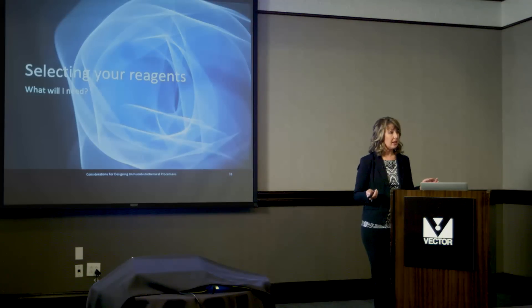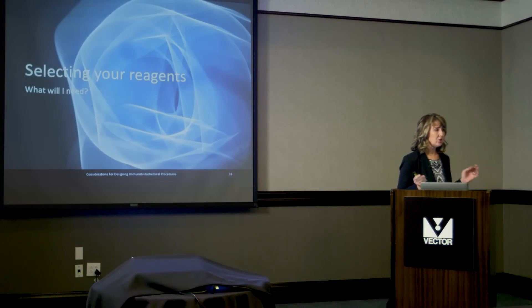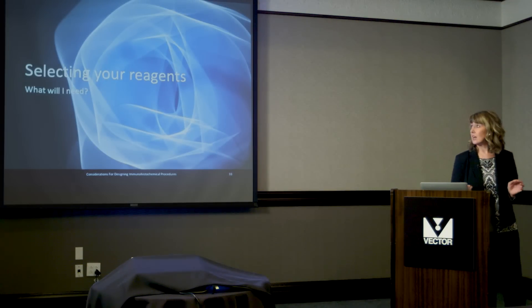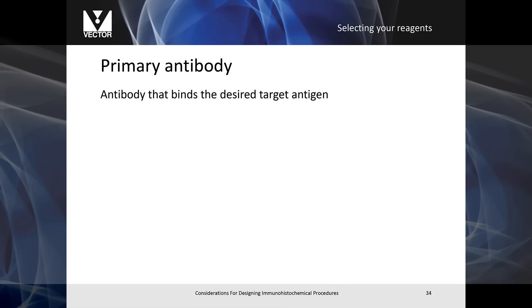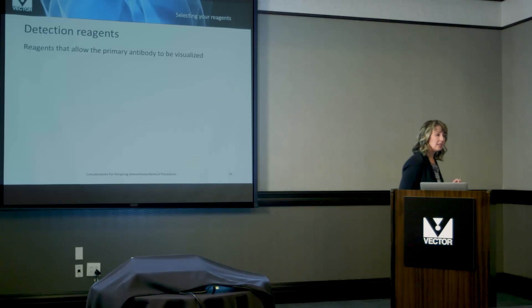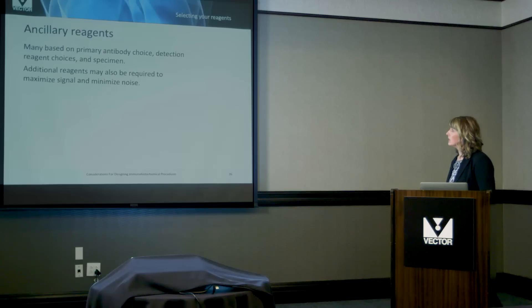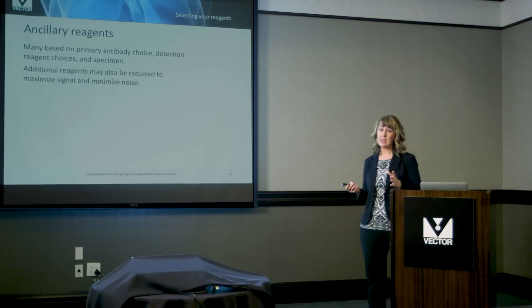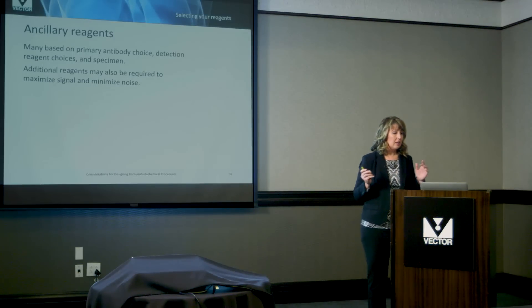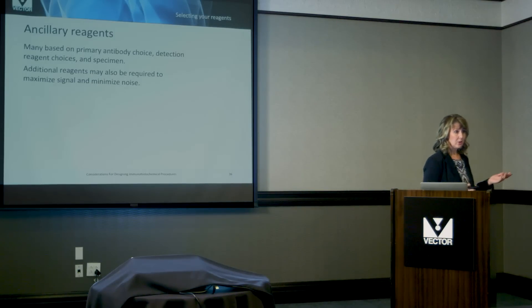So now it's time to select your reagents. What will you need to achieve the result that you desire? The first thing you'll need is a primary antibody, which is the protein or antibody that will bind to the specific target you're interested in visualizing. The next thing you'll need to choose are the detection reagents, which will allow you to visualize that target underneath your microscope. Lastly, you may need to add ancillary reagents into your protocol. These can be due to the reagent choices that you've made or your specimen that you're using.